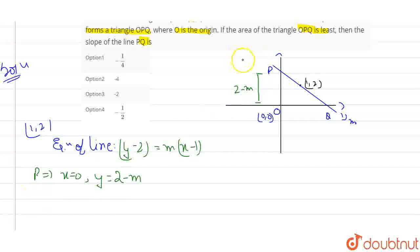Similarly, for P the coordinates are 0, 2-m. Similarly, for point Q, we will take y=0, because these are the intercepts of x. So the value of x will come out as 1-2/m. Here this distance will be 1-2/m. And this point is 1-2/m, 0.